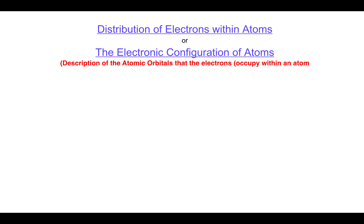Bismillahirrahmanirrahim. In the previous section we had discussed about the structure of atom along with the shapes of the atomic orbitals. In this section we will be discussing the distribution of electrons within atoms, or we can say the electronic configuration of atoms.